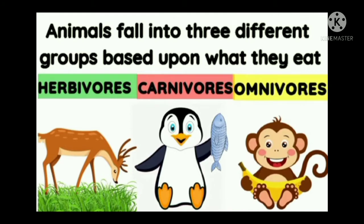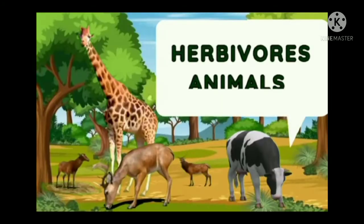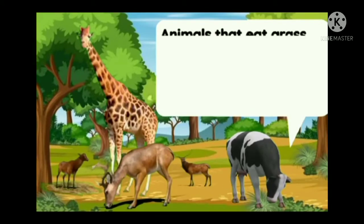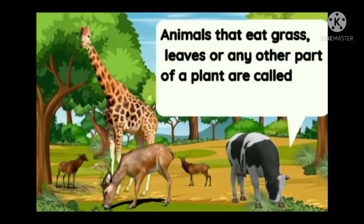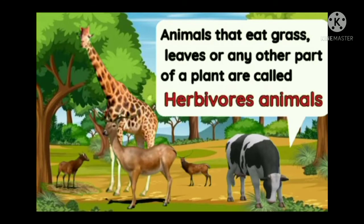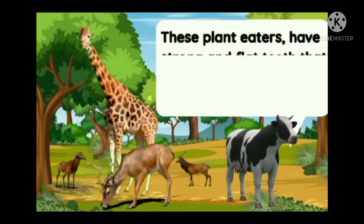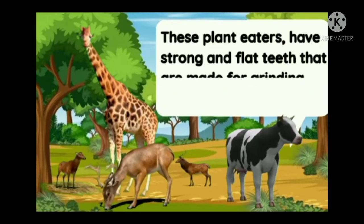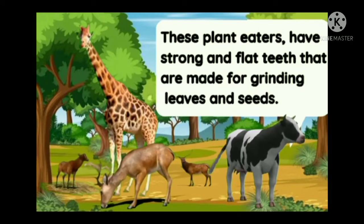Starting with Herbivore animals. Animals that eat grass, leaves or any other part of a plant are called plant eating animals or Herbivore animals. These plant eaters have strong and flat teeth that are made for grinding leaves and plant seeds.